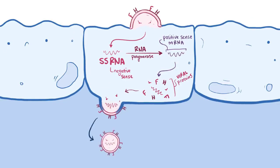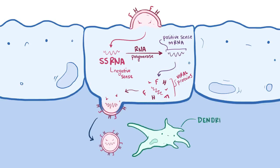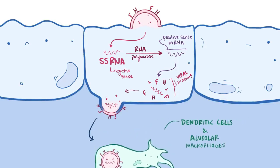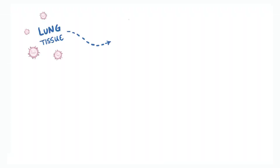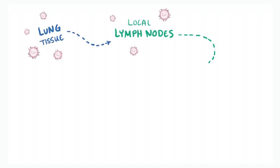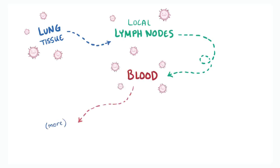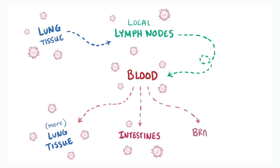Within days, the measles virus spreads through local tissue and is picked up by dendritic cells and alveolar macrophages, and carried from the local tissue in the lungs to the local lymph nodes. From there it continues to spread, eventually getting into the blood and spreading to more lung tissue as well as other organs like the intestines and the brain.